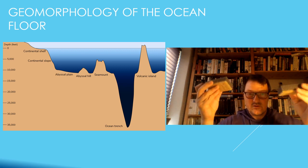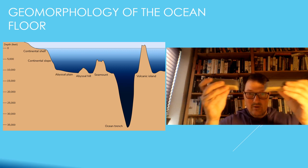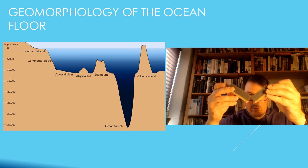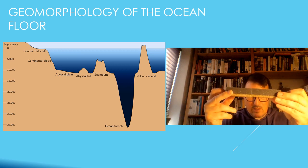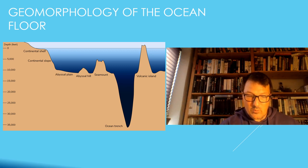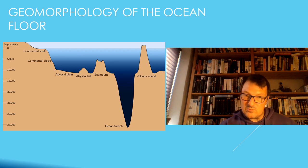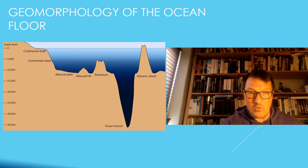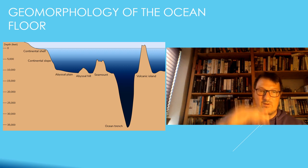We also have, specifically in the Pacific, we have the ocean trenches when two plates go together, convergent plates, and then one pushes the other down. So we get this very deep depression in the ocean floor. The most famous one and the deepest one is the Mariana Trench, which goes down to a depth of more than 11,000 meters, which is way deeper than Mount Everest is high.